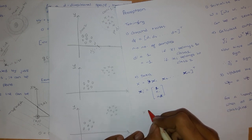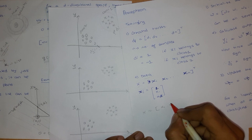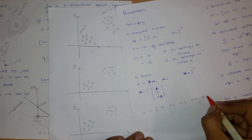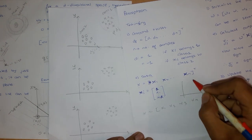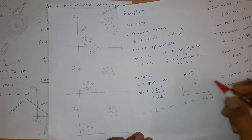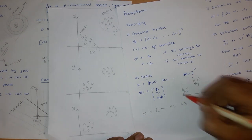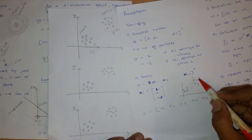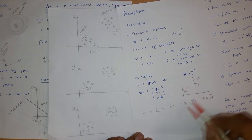For example, suppose we have five samples X1, X2, X3, X4, X5. We can see that three of these data points belong to one class and the remaining two belong to the other class.